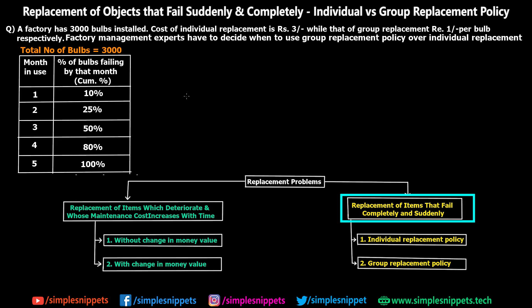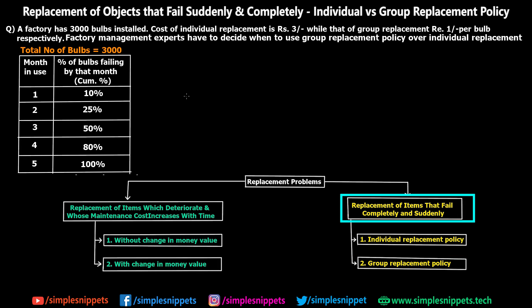So we don't have any choice other than replacing them, but we have two different policies as options. The first policy is individual replacement — that is, replace objects as they fail one by one. Or you can perform a group replacement depending upon which one is cheaper. This group replacement and individual replacement is most suitable when we have a larger number of assets.